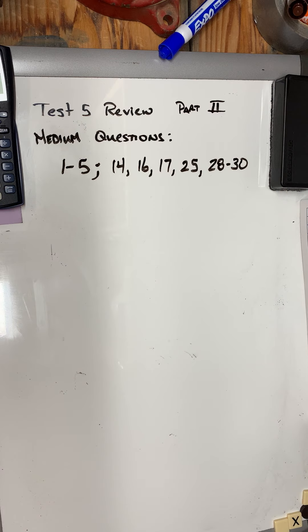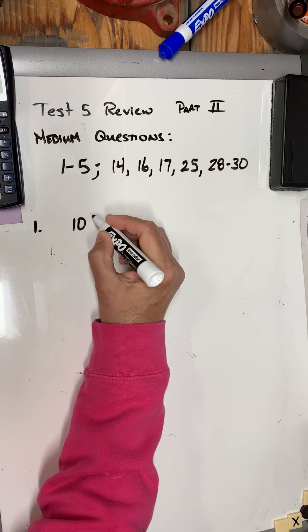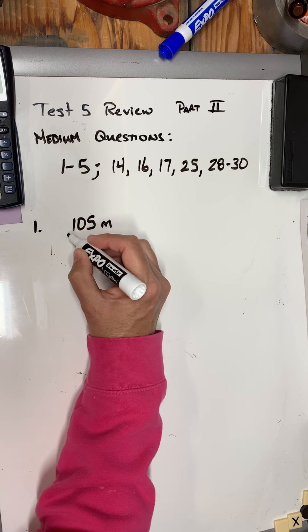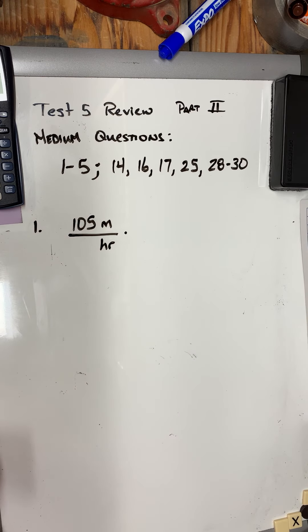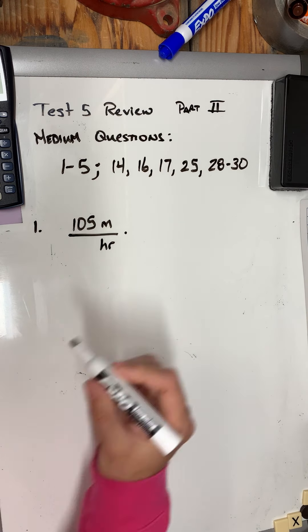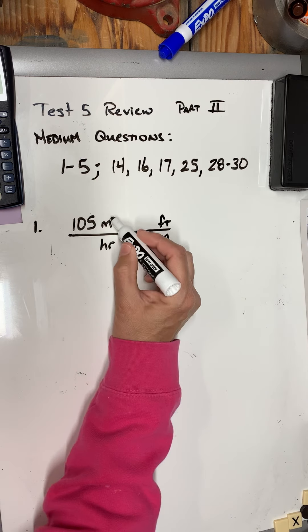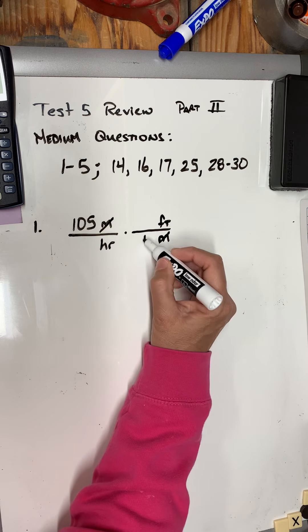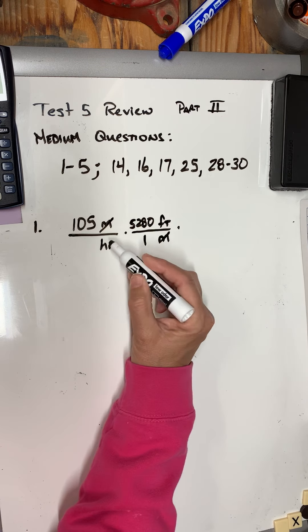Okay, so I'm looking at the first one, number one. It says they want me to convert 105 miles per hour to feet per second. So this is number one: I've got 105 miles per hour, and they want me to convert that to feet per second. The first thing I'm going to think about is changing to feet.